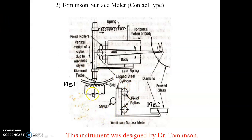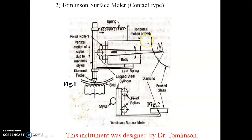In the Tomlinson surface meter, there is a diamond probe placed between cylinders and two fixed rollers. Due to the movement over peaks and valleys, it rolls up and down. The stylus arrangement is fixed by a leaf spring and connected to a helical spring, and an arm is attached to the stylus probe. When there is a peak or valley, the arm rotates up and down, recording the movement on a smoke glass dial indicator.